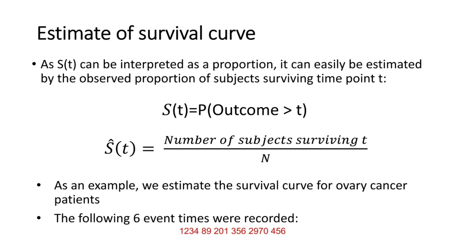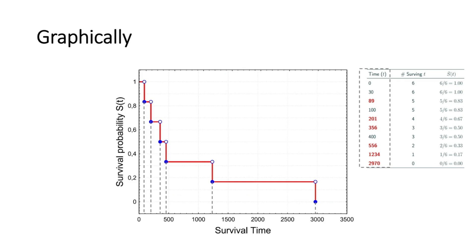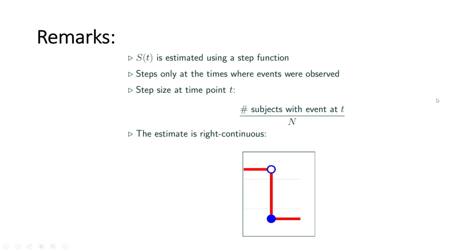As you can see, the following six event times were recorded and correspondingly we calculated an estimate of this function for different event times. If we plot these estimated values, we will get this graph. As this plot suggests, the curve is estimated using a step function. Steps are only at the times where events were observed. The step size at time T is calculated as the number of subjects with an event at time T divided by the number at risk, and the estimate is right continuous.